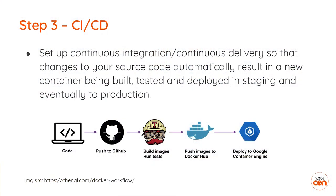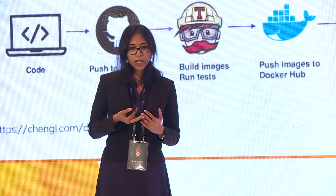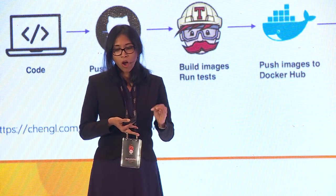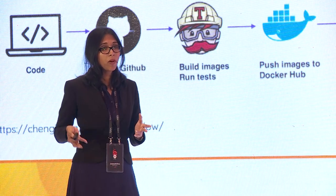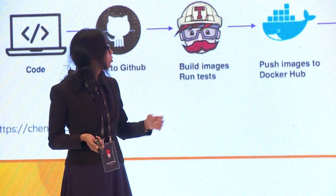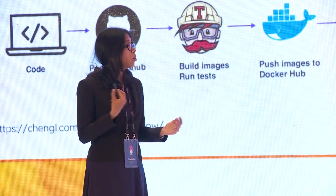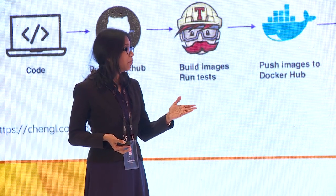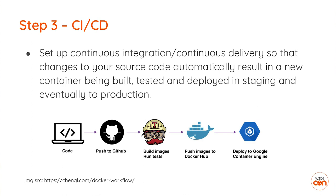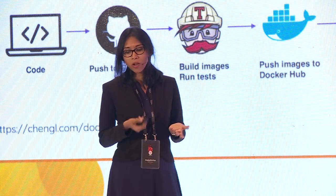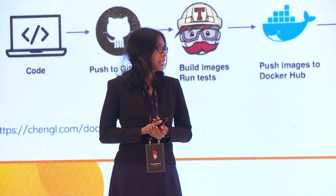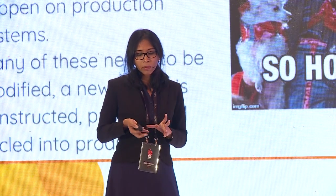In a container native approach, you also need to look at CI/CD from a container native angle. Set up continuous integration and continuous delivery so that changes to your source code automatically result in a new container being built, tested, and deployed straight into production. A developer makes a code change, pushes to GitHub, the continuous integration system builds the code, builds a Docker image, pushes it to Docker Hub or a private repository, and deploys to your container cluster manager.